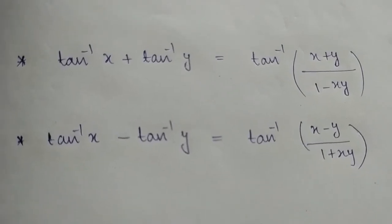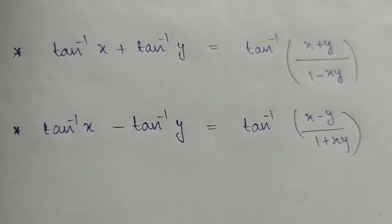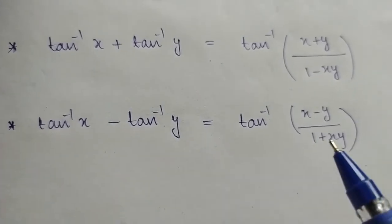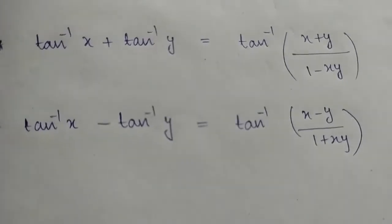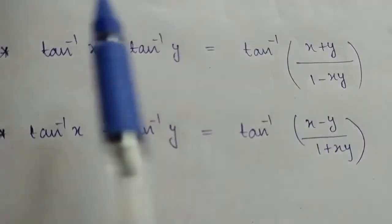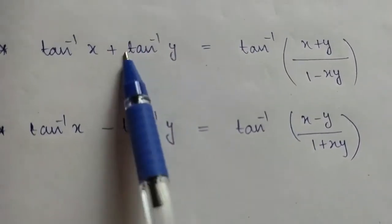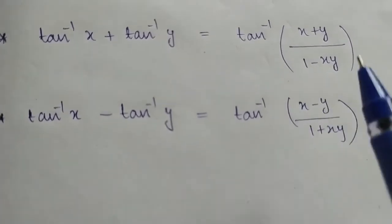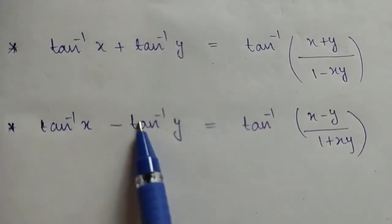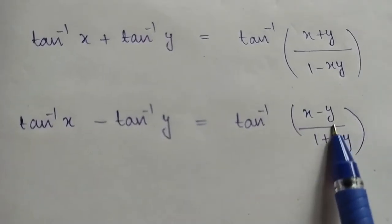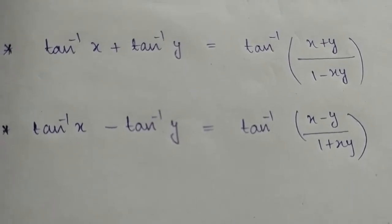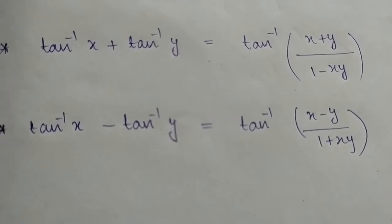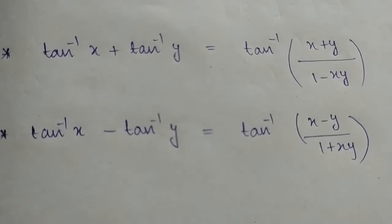This is the important formula for tan inverse addition and subtraction. Tan inverse x + tan inverse y = tan inverse of (x + y)/(1 − xy). And tan inverse x − tan inverse y = tan inverse of (x − y)/(1 + xy). These are very important formulas, and I will also ask questions about sin inverse and cos inverse.